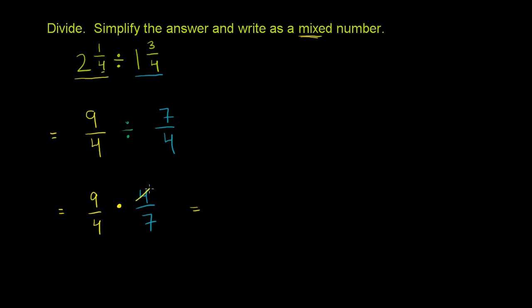So you divide this 4 by 4, you get 1. This 4 by 4, you get 1. So now when you multiply it, you get 9 times 1, which is 9, over 1 times 7, which is 7. So we have our answer, but right now it's an improper fraction.